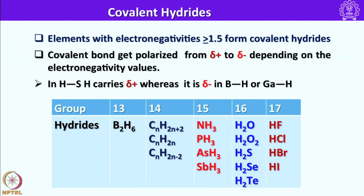Listed hydrides of p-block elements by group: Group 13 — the simplest hydride is BH3, but it readily dimerizes to form B2H6. Group 14 — carbon forms hydrides with formulae CₙH₂ₙ₊₂, CₙH₂ₙ, and CₙH₂ₙ₋₂ (aliphatics, alkenes, alkynes). Group 15 — almost all elements form trivalent, tricoordinated hydrides: NH3 (ammonia), PH3 (phosphine), AsH3 (arsine), and SbH3 (stibine).